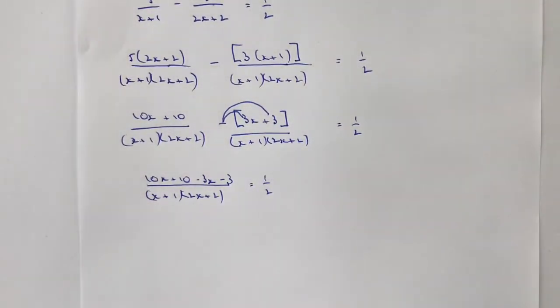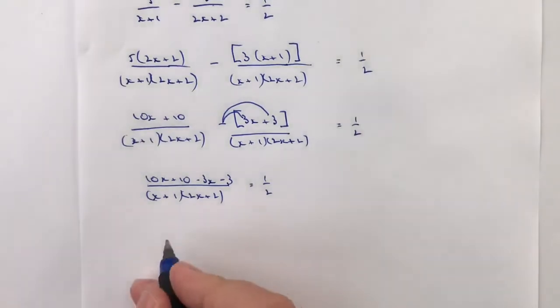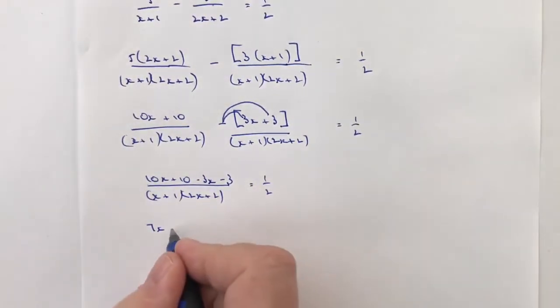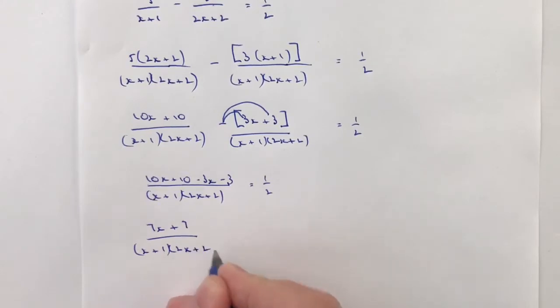And that's why those square brackets are in place is just to remind me about that negative sign in the middle. So let's tidy it up a little bit further. I've got 10x minus 3x is 7x and I've got plus 10 minus 3, well that's going to be plus 7. Divide that by x plus 1, 2x plus 2 again and that equals a half.